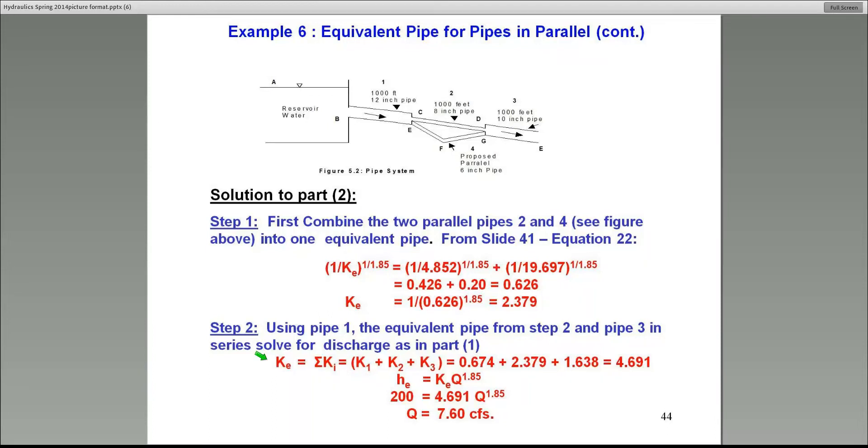So therefore, this equivalent pipe now for those two parallel pipes is this. This is essentially going to represent the same head loss as would transpire if the two parallel pipes are used. We're going to replace the whole thing. Once we get the parallel pipes replaced with a single pipe, we can recognize that we have pipe number one and the equivalent pipe that I just got.